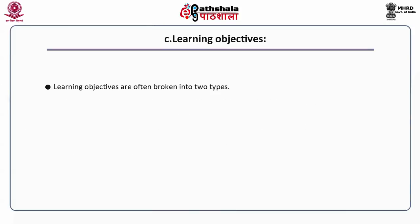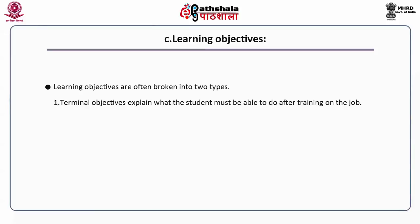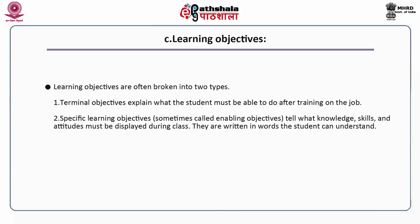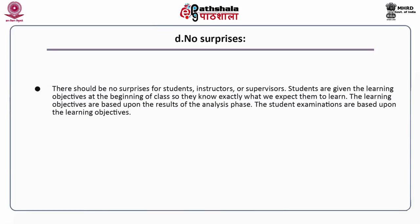Learning objectives can be broken down into two types. The first is terminal objectives, which explain what the students must be able to do after training on the job. Second, specific learning objectives — sometimes also called enabling objectives — tell what knowledge, skills and attitudes must be displayed during class. They are written in words so that the student can understand. There should be no surprises for students, trainees, instructors, or supervisors. Students are given the learning objectives at the beginning of the class so that they know exactly what is expected of them. The learning objectives are based upon the result of the analysis phase, and student examinations are based upon the learning objectives.